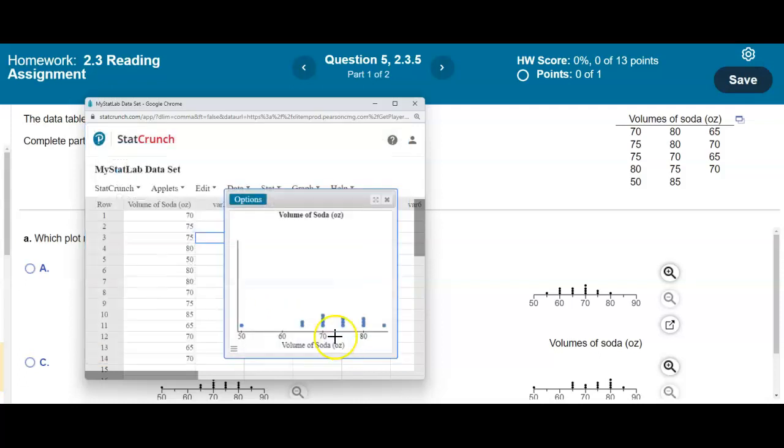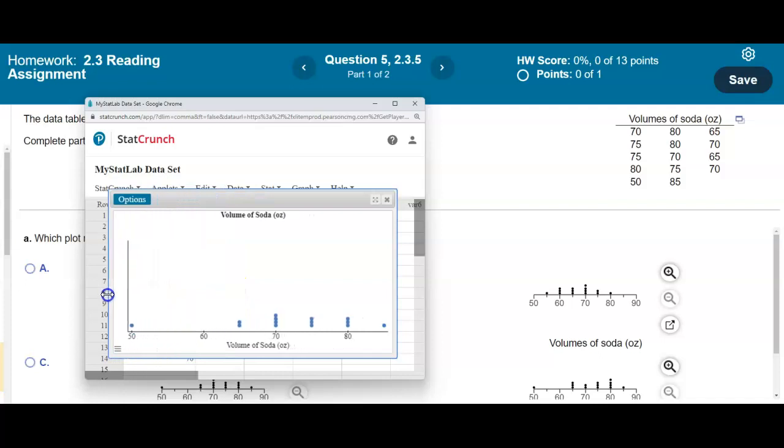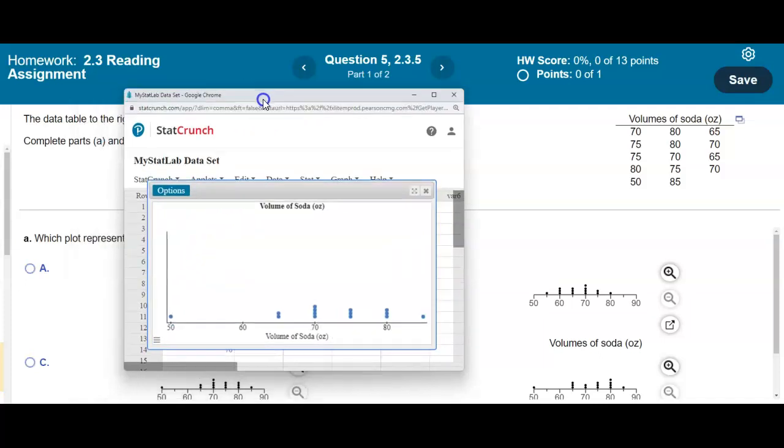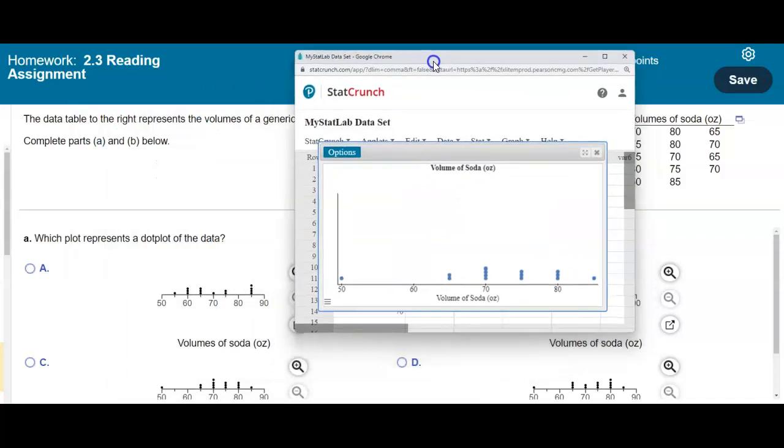And then let's select compute. And so now we can see what the dot plot looks like. Okay. So here we can see that we have the following values.